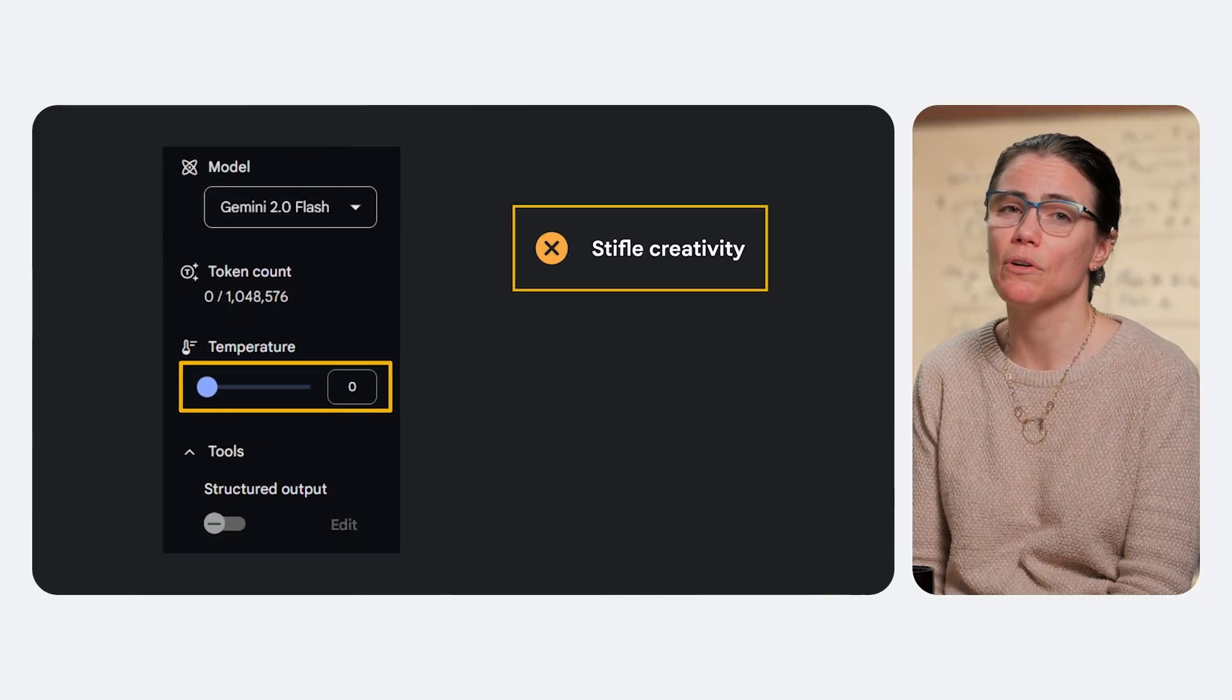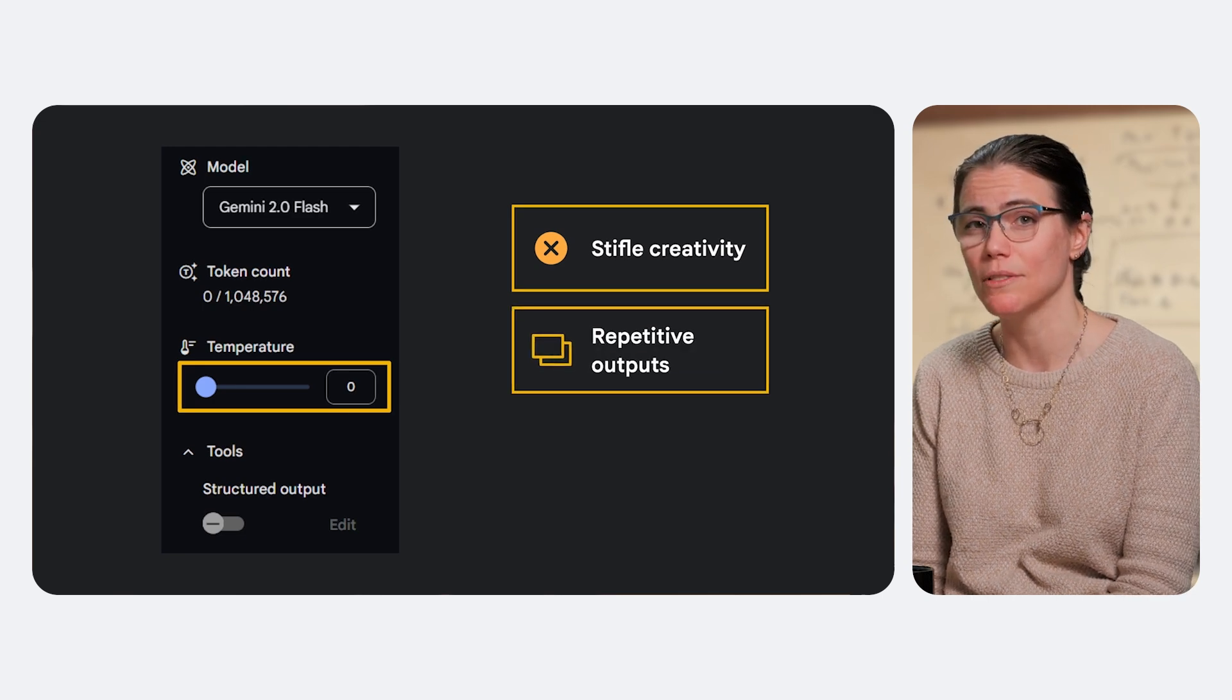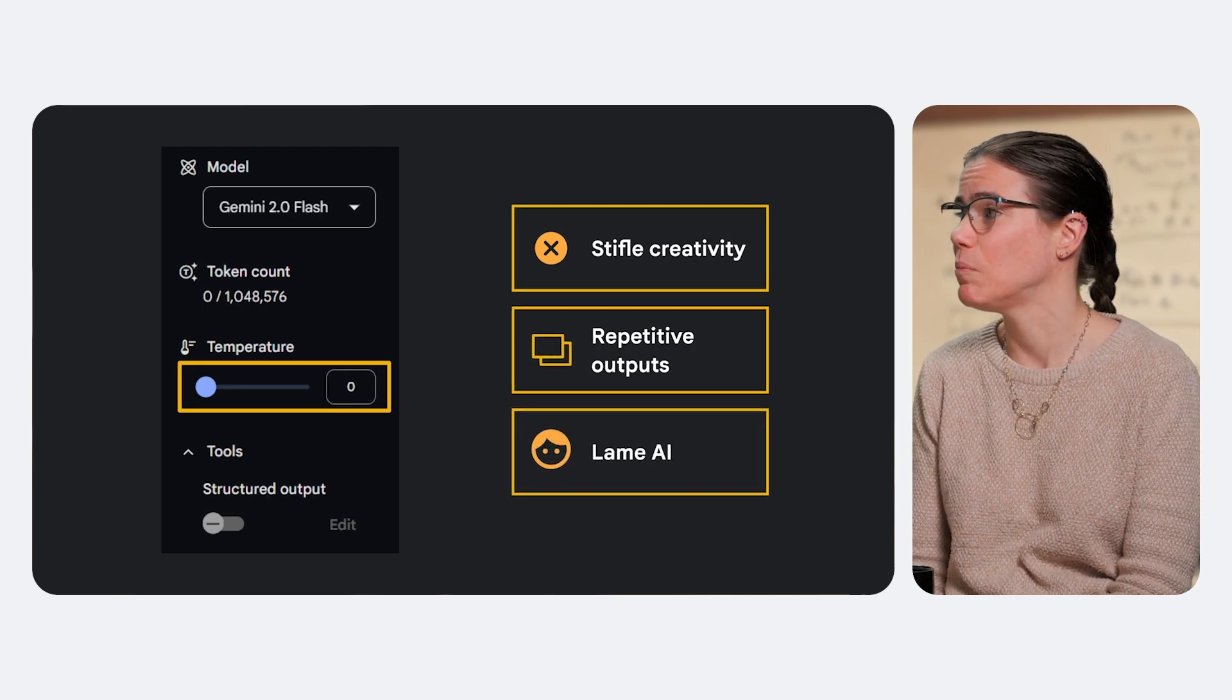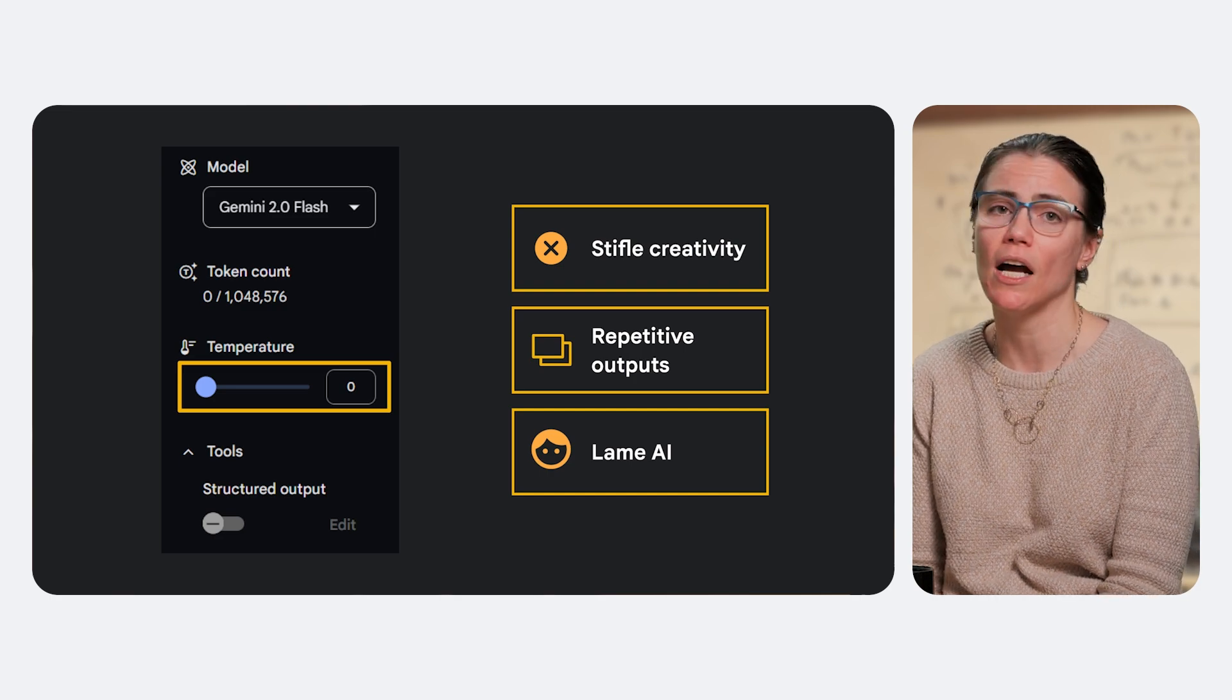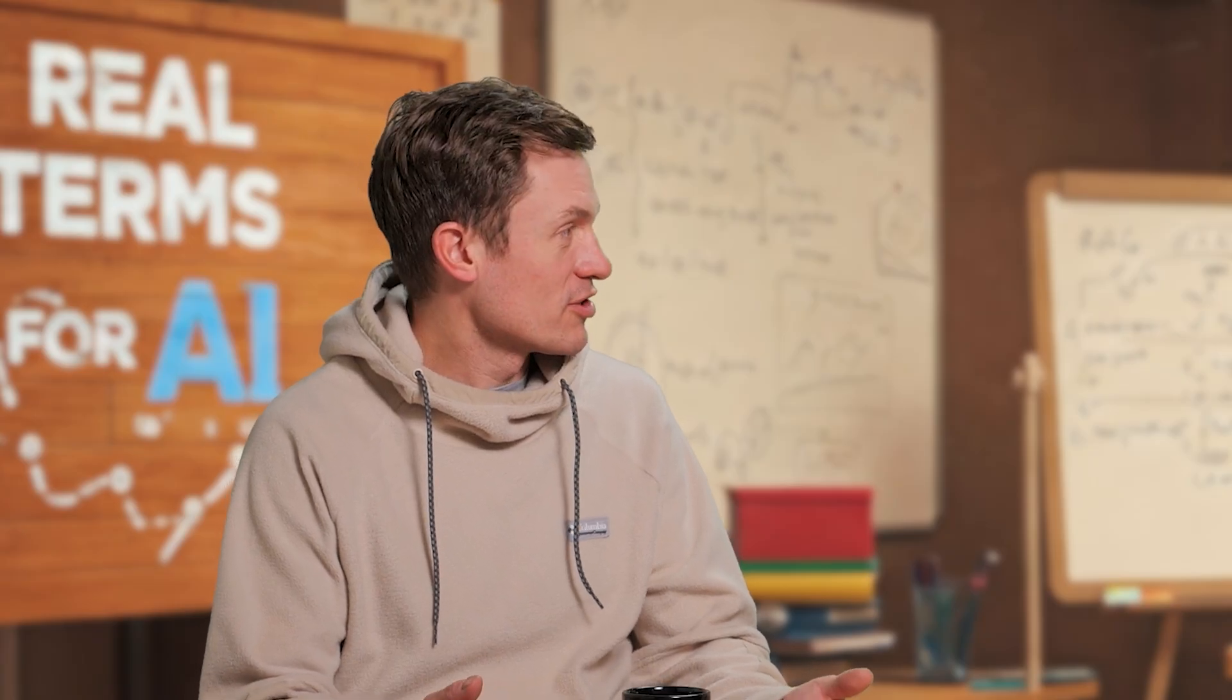Turning down the temperature can stifle creativity, it leads to repetitive outputs, and it makes your AI, well, boring. It kind of gets rid of some of the magic and the value of generative AI. But if we can't just change temperature to zero, then where would we start?